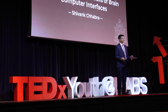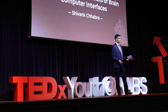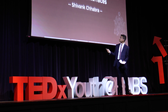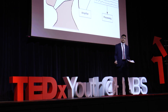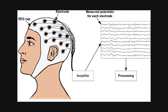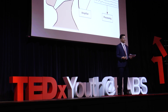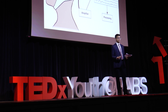The first, signal acquisition, as is evident by the name, is the gathering of neuron signals. There are two key methods that are used. The first involves measuring the hemodynamic activity of the brain. This basically means that as parts of the brain become more active, more oxygen goes there, and these methods essentially detect the change in oxygen supply.